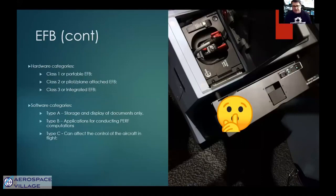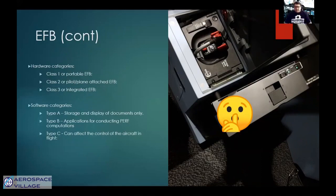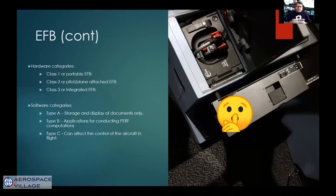Hardware categories have different names depending on which regulator you sit under and how long you've been in the business — I've included both here with some general characteristics. Class one or portable EFBs are often small devices that double up as corporate devices at the same time. Think of a small iPad with no connectivity to the aircraft. They're considered like a personal electronic device and as such must be stowed during takeoff, taxi, and landing.